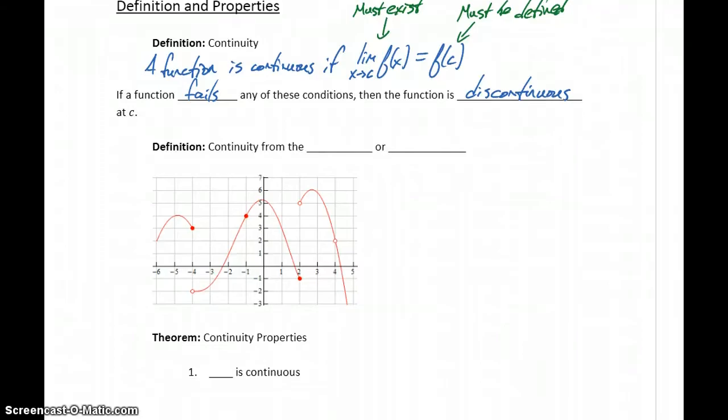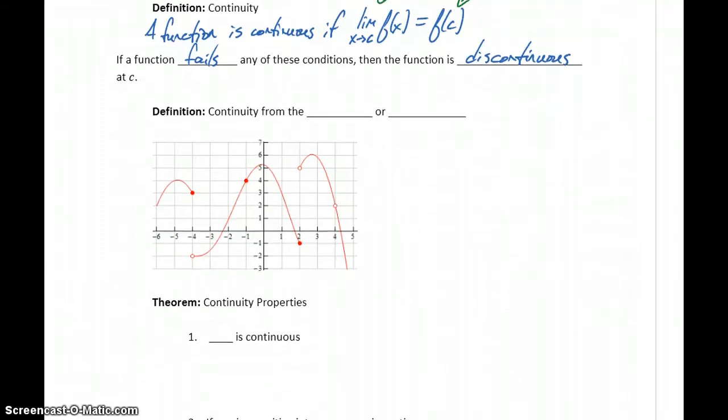When we talked about limits, we also had the possibility of discussing one-sided limits, right and left-hand limits. So we can also talk about continuity from the right or continuity from the left. In this graph to the left, we can look at this point negative four.